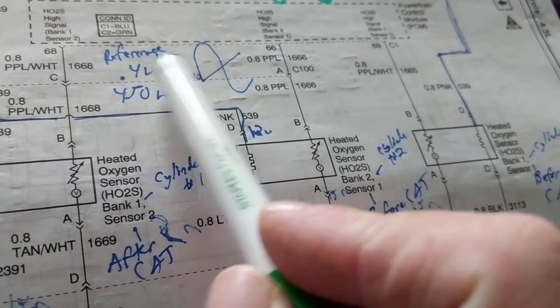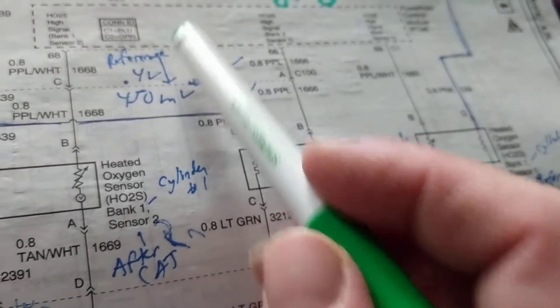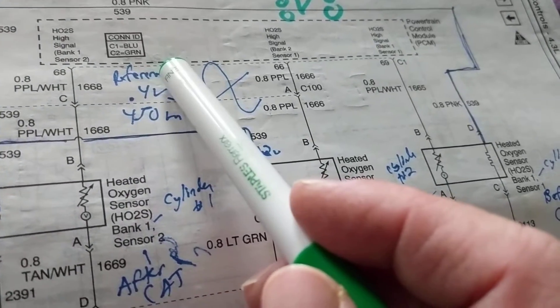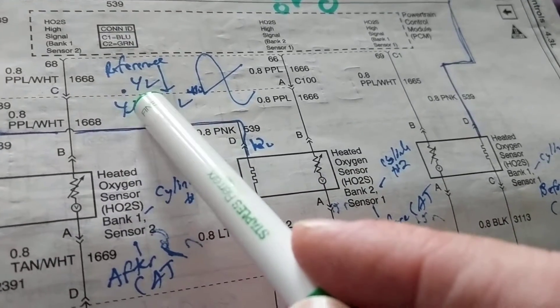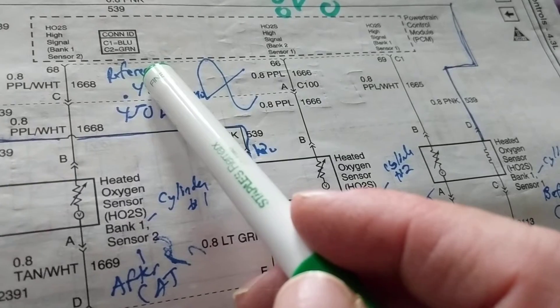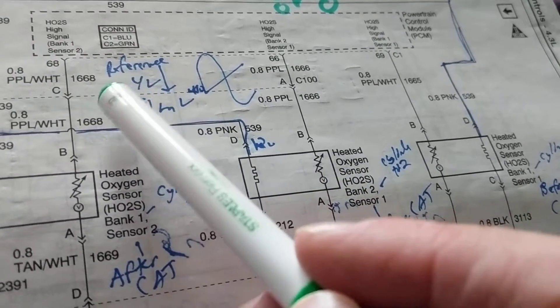The midpoint is about 0.4 volts or 450 millivolts. Going above that 0.4, you're in a rich condition. Below that, you're in a lean condition. What does that mean? Rich condition means you have more fuel per part air. Lean condition means you have more parts air.